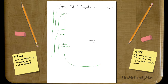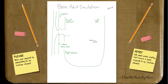I'm going to draw the heart kind of like a kindergartner would, but I think it will help you grasp the concept a little bit better. The heart is divided into four different sections: you have the right atrium, the right ventricle, the left atrium, and the left ventricle.